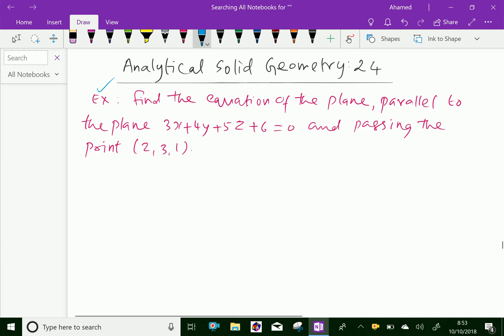Find the equation of the plane parallel to the plane 3x plus 4y plus 5z plus 6 equals 0 and passing through the point (2, 3, 1).